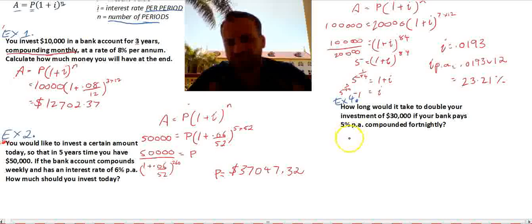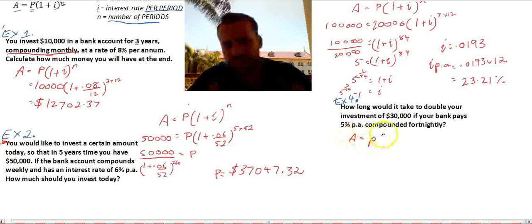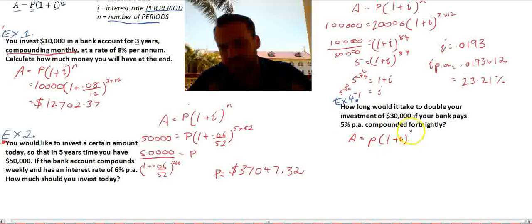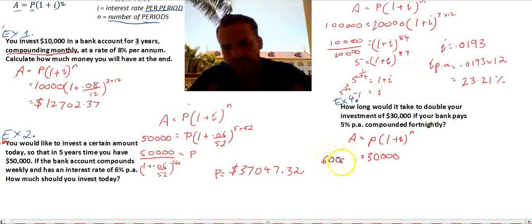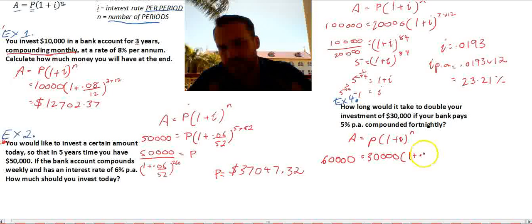Okay. It's 5% per annum compounded fortnightly. It doesn't look like we've got a lot of information, but we have enough to work with. A equals P times 1 plus I to the power of N. So, how long would it take to double your investment of $30,000? So, our principal, our present value is $30,000. Double that, it's going to be $60,000. 1 plus... It's 5% per annum compounded fortnightly. So, that's 0.05 divided by 26 because there's 26 fortnights in a year. And how long would it take to double your investment? And there's our number of periods, N.